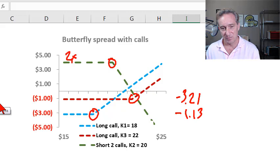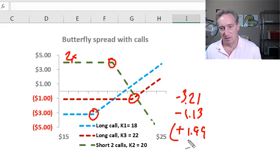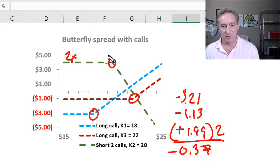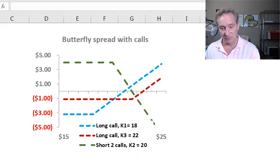And then we have two short calls that we write at $1.99 each, so times two, and that nets out to negative 37 cents that we incur to put on this butterfly spread with calls that involves four calls, you can see.